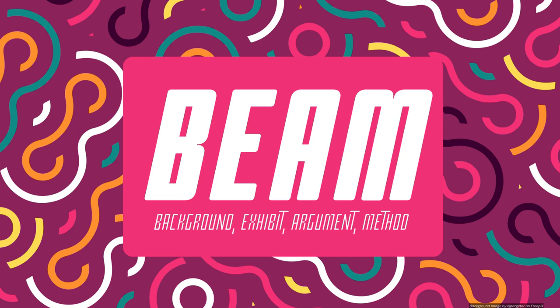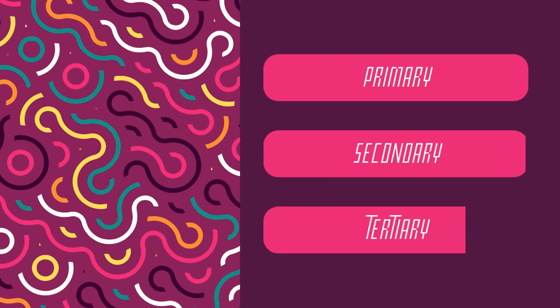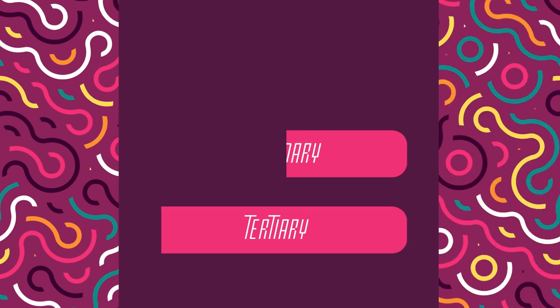Hello. Today you will be learning the ins and outs of BEAM, a framework intended to help discuss and identify different types of resources that you might find while conducting research. BEAM was designed in 2008 by Joseph Bissip to better expand upon the idea of primary, secondary, and tertiary source classifications. While primary and secondary classification remains a valid way of classifying resources based on their relative proximity to the source of the information, BEAM offers another way to classify sources by how they affect one's own writing.